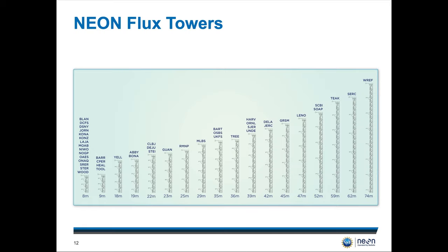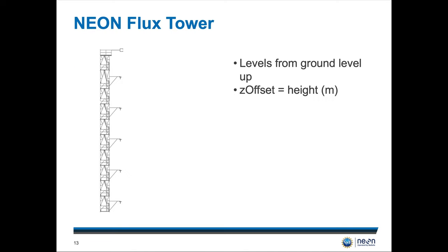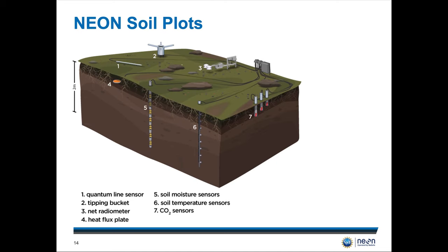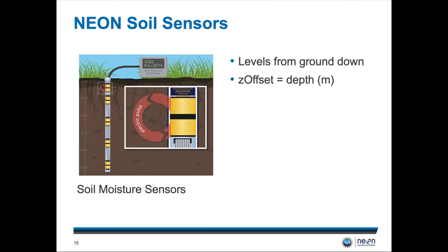Our terrestrial instrument data is also very interesting. Most notably, we have our instruments located on our NEON flux towers. These towers are designed to be a bit taller than the vegetation they're monitoring, so they're at different heights depending on each ecosystem. Each tower has multiple levels above the ground where we collect information, and that's located in the z offset attribute of each data set. Our soil plots measure in the opposite direction, going down into the earth. We have soil moisture sensors at different monitoring depths in the soil surface, also represented by the z offset in meters.